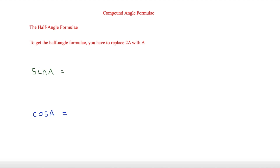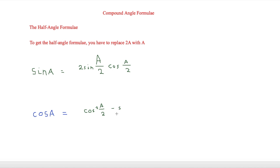To get the half angle formulae, all we need to do is replace 2A with A from the double angle formulae. So sin A = 2sin(A/2)cos(A/2), replacing 2A with A. And for cos A, that gives cos²(A/2) minus sin²(A/2). Those are the half angle formulae we need to learn for now.